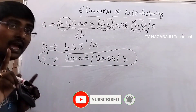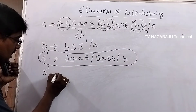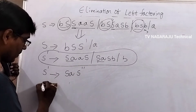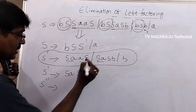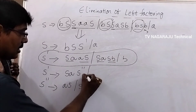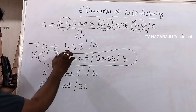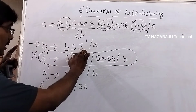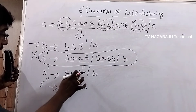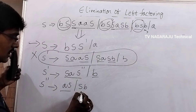Under S-dash we again have a common prefix 'a', so the process is repeated. S-dash tends to S-a followed by S-double-dash. S-double-dash tends to the remaining: aS | b. This continues until full elimination of left factoring. The final answer: S tends to bS S-dash, and S-dash is replaced with either S-a S-double-dash or the terminal.